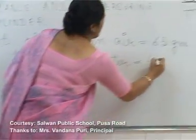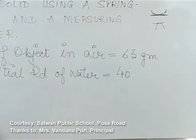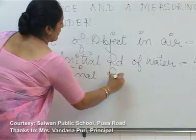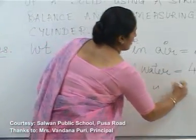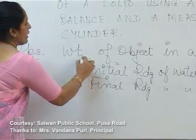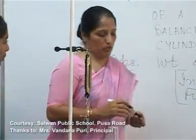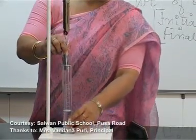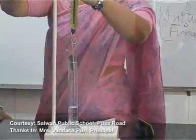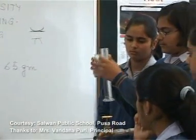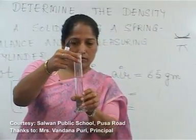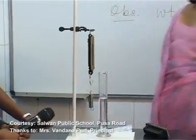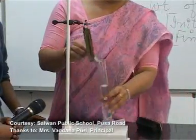The initial reading of the water is 40. When we put this object in the liquid, we will see the final reading. The difference in the two readings gives us the volume of the object. The level of water is now 80 before immersing the object.